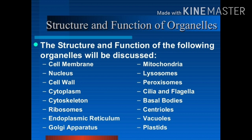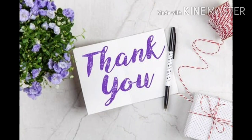The main organelles include the cell membrane, nucleus, cell wall, cytoskeleton, ribosome, endoplasmic reticulum, and Golgi body. I will talk individually about these parts in our next video. Please watch my video completely. Thank you for watching.